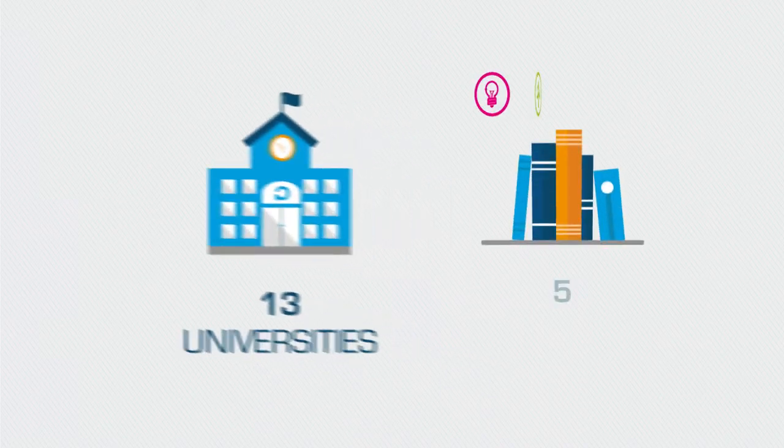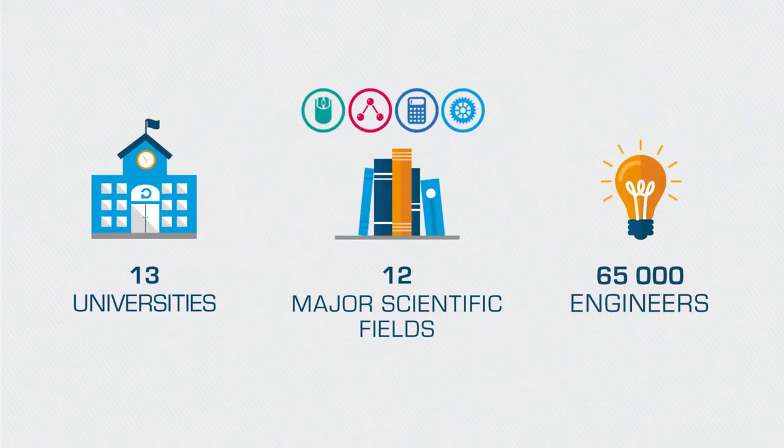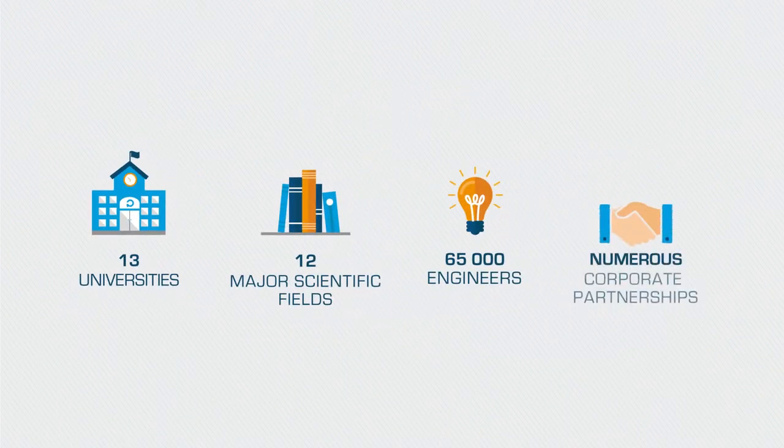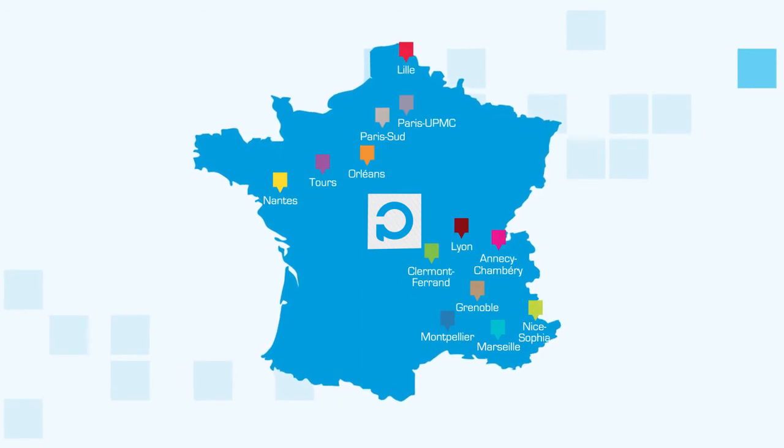With 13 universities, 12 major scientific fields, 65,000 alumni engineers and numerous corporate partnerships, the Polytech Group is the biggest French network of engineering faculties.